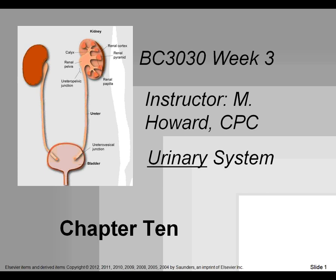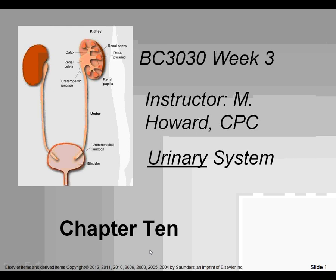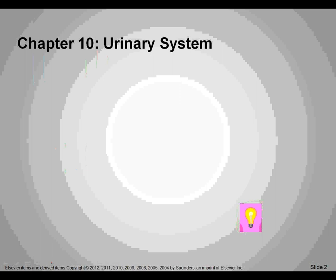Hello everyone. Welcome to BC 3030, Week 3, Lecture covering Chapter 10, which is the urinary system. One of the things that you guys can do every week is go online and download your diagrams to help you visualize the areas that you will be coding for this week. For instance, if you want to clarify where the ureters are in approximation to the bladder, it's good to have a diagram in front of you. There are a few in the chapter that are helpful, but it's also good to print them out to have with you when you're doing your coding.